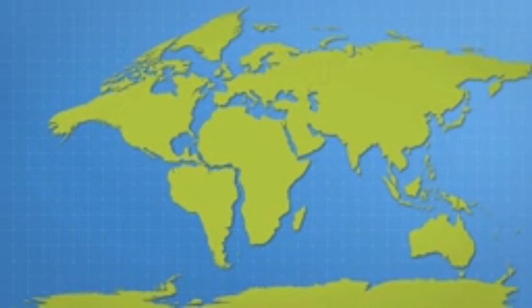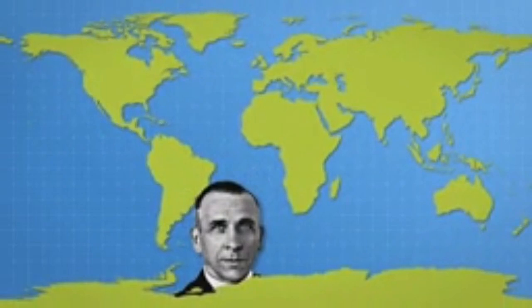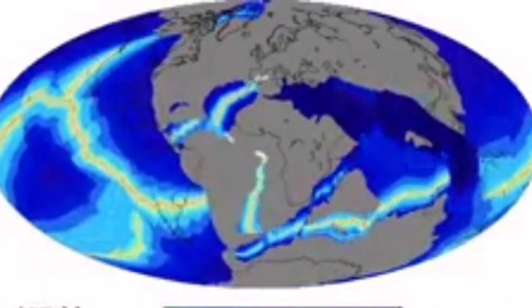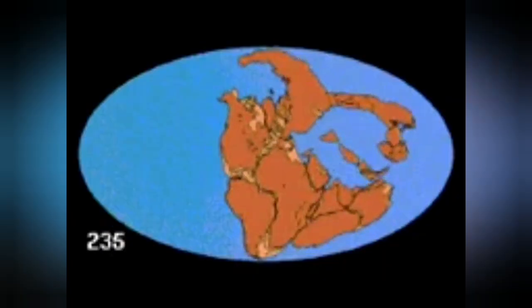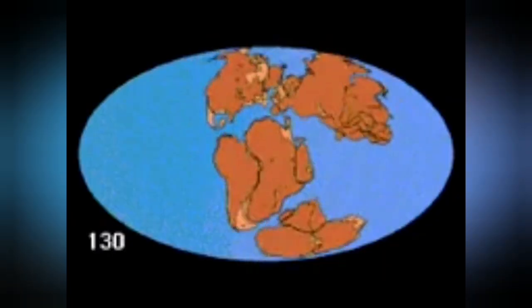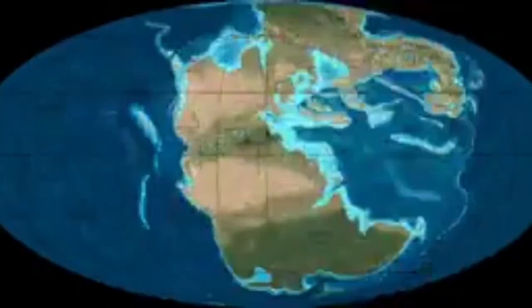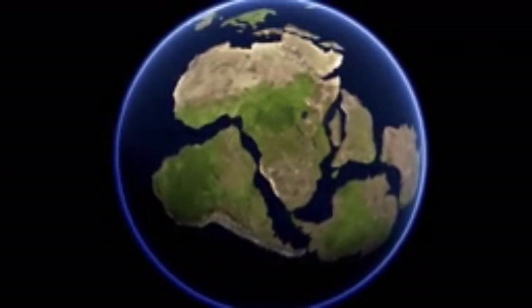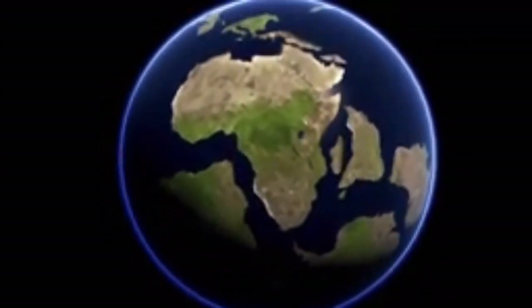We first discovered that certain coastal areas of the world — for example Africa and South America — match together as if they have been joined together in the past. Alfred Wegener discovered this first. Now we know that the earth's continents are actually not in their original place; they have moved many times over since the creation of the earth four and a half billion years ago.